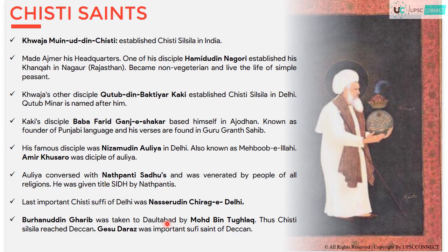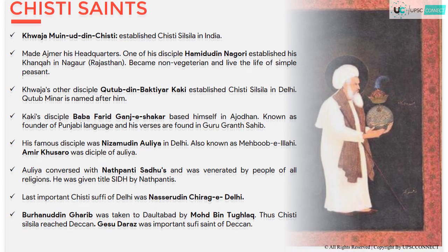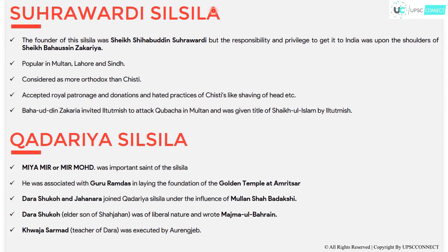From Nizamuddin Auliyah, the Chishti Silsila spread to the Deccan, where Gaisu Daraz was one of the very important Sufi figures. The next order is the Suraavardi Silsila, whose founder was Sheikh Shihabuddin. In India, it was carried on the shoulders of Sheikh Bahauddin Zakariya, who opened their first hospice. The order was very popular in Lahore and Sindh. This order, unlike the Chishti Silsila, was more orthodox and accepted royal patronage and donations.